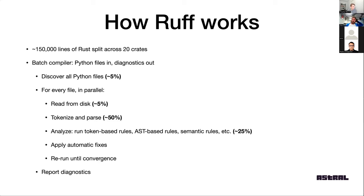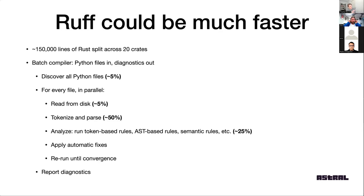Looking at how Ruff works today — these numbers depend completely on the project size and settings, and Ruff supports about 600 rules — with the default configuration over Apache Airflow: some time is spent on IO to find and read all Python files, a lot of time is spent on tokenizing and parsing, and then a bunch on actual analysis. The rest is lost in various small places like allocating and dropping memory. Funny thing is, this says Ruff could be way faster — we have spent by far the least time optimizing the parser and lexer, which is where we're spending a lot of time. So I actually think Ruff can be much faster than it is today.